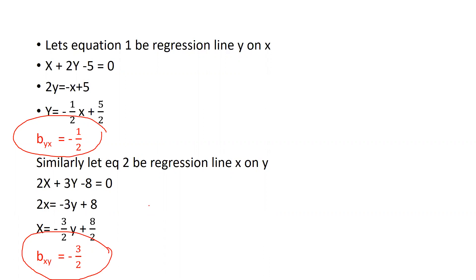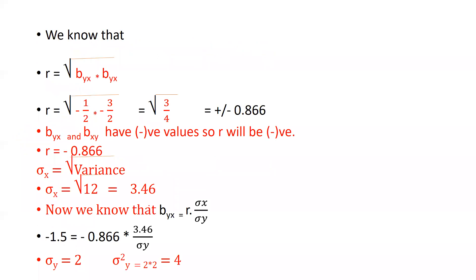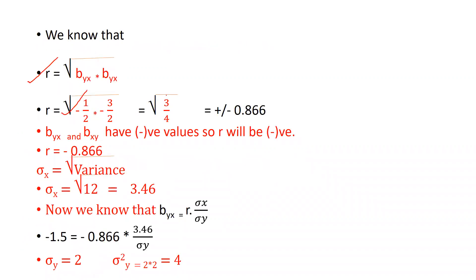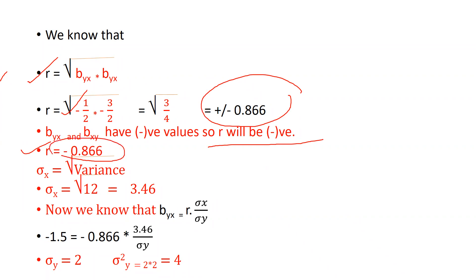With the help of these regression coefficients, we can get the value of r. The formula is r equal to square root of byx multiplied by bxy. We will put both values: minus 1/2 multiplied by minus 3/2 gives us 3/4, and the final solution is 0.866. Since byx and bxy both have negative values, r is treated as negative. So the final value is r equal to minus 0.866.